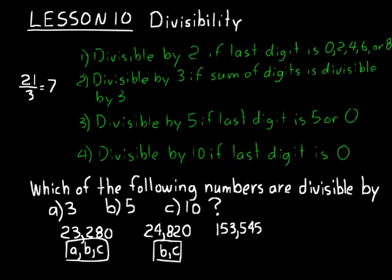And then the last one, 153,545. Add up the digits. 1 and 5 is 6 plus 3 is 9 plus 5 is 14 plus 4 is 18 plus 5 is 23. That's not divisible by 3.